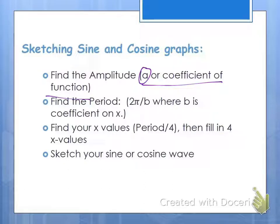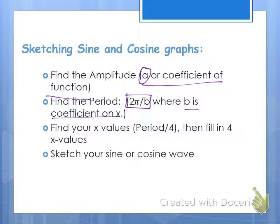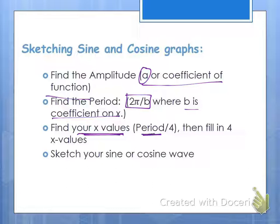Then we've got to find the period. The period might change. The period is found by just taking 2π and dividing it by b. Now what's b? b is the coefficient on x — so it's the coefficient on the angle measure. Then for tick marks on the x-axis, to find your x-values, take whatever the period ends up being after you do 2π divided by b, and divide that by 4.